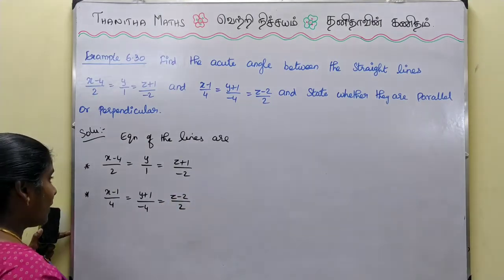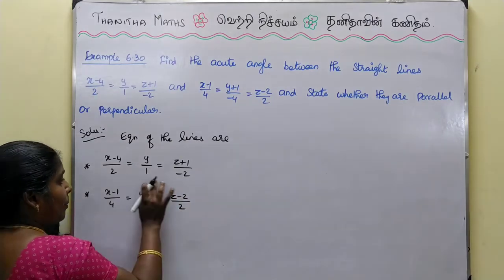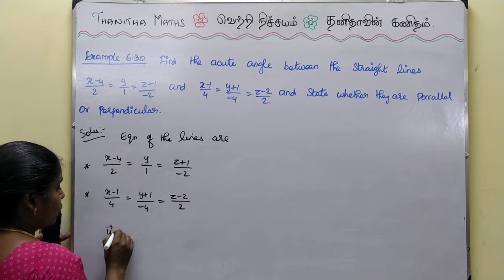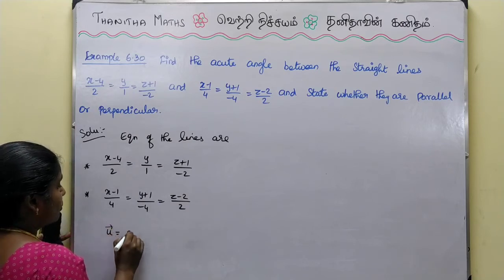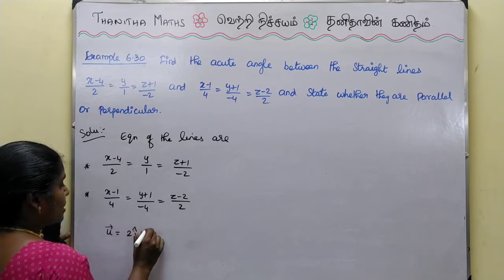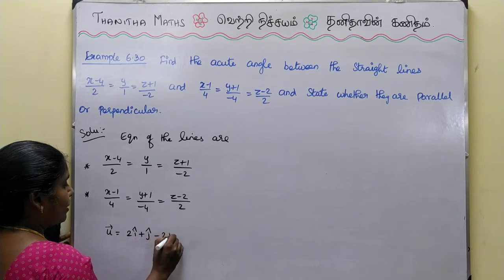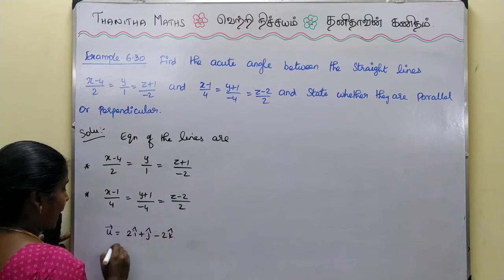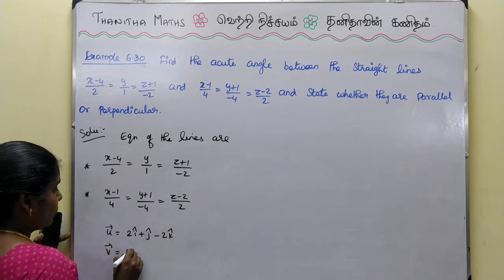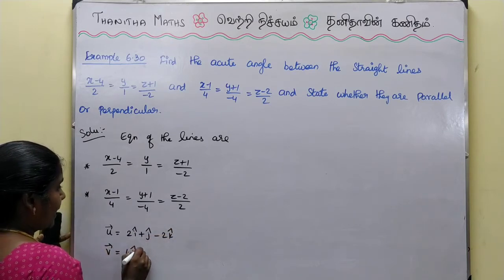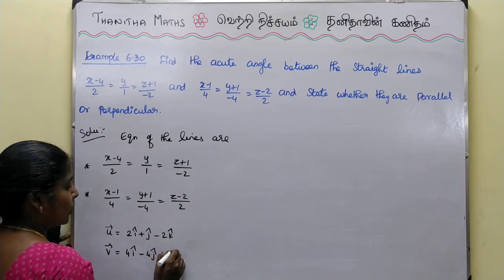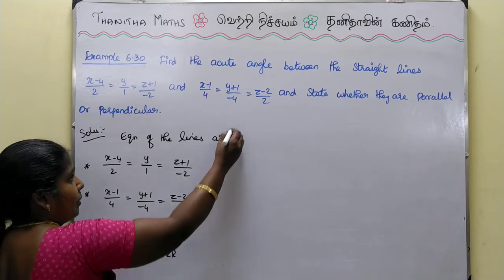The direction vectors are: u vector = 2i cap + j cap - 2k cap, and v vector = 4i cap - 4j cap + 2k cap.